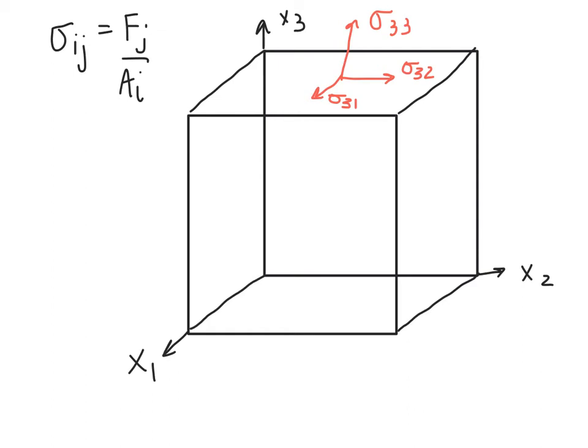Now we can look on the x2 face. So, this would be sigma 22 on the 2 face in the 2 direction. Sigma 23 on the 2 face and in the 3 direction, and sigma 21 on the 2 face and in the 1 direction.